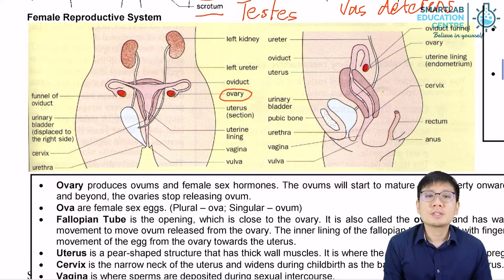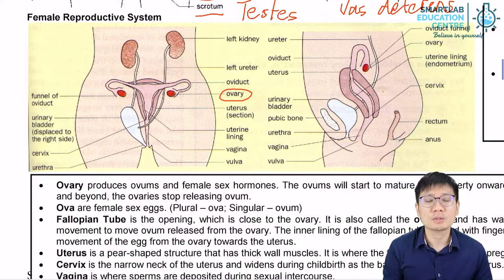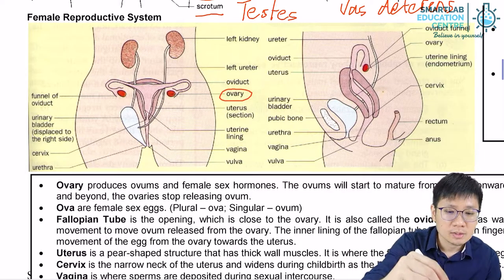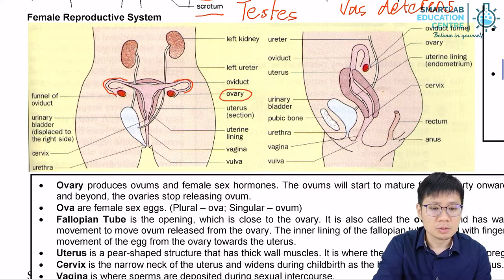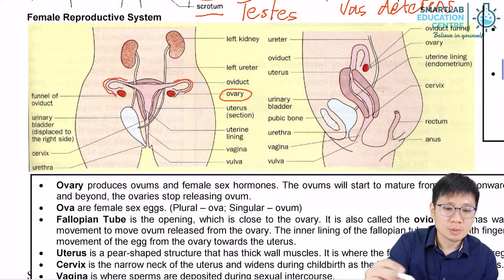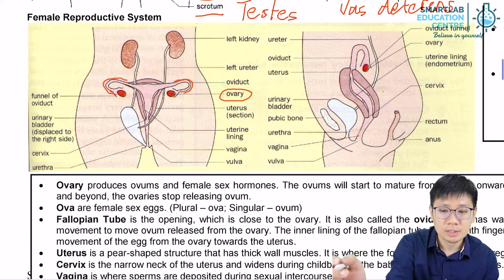The ovaries already contain a lot of ova, but none of the ova are mature yet. It is during each menstrual cycle that a single ovum will continue the maturation process and be released into the fallopian tube or oviduct. During the menstrual cycle, there is a process called ovulation — the ovum is released from the ovary and enters the fallopian tube.